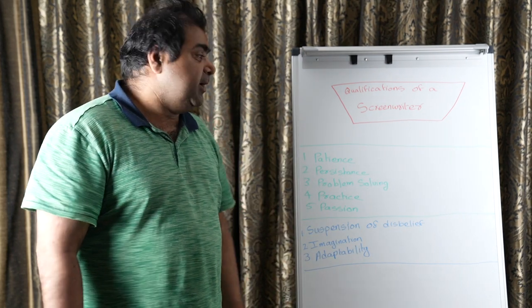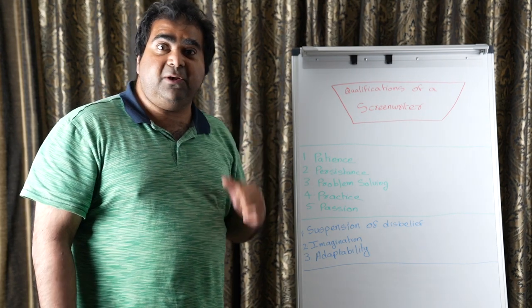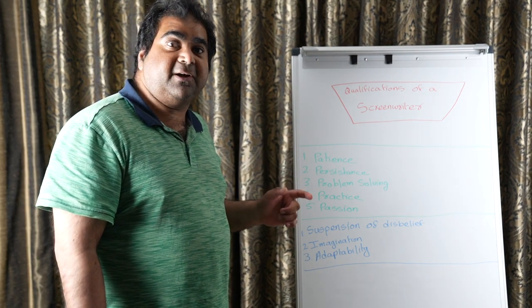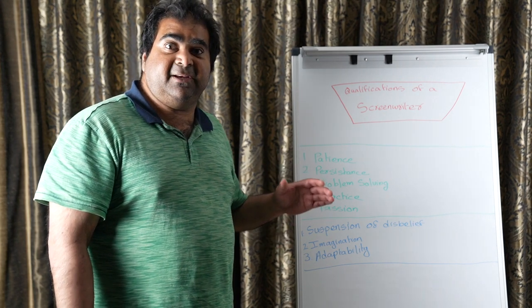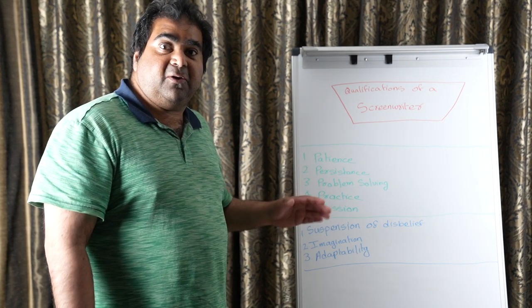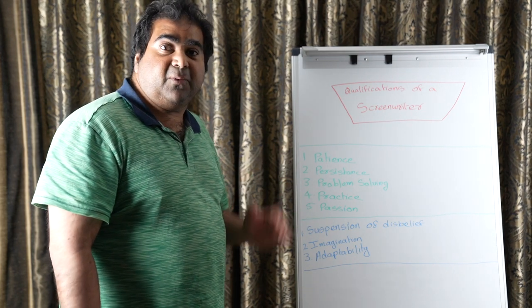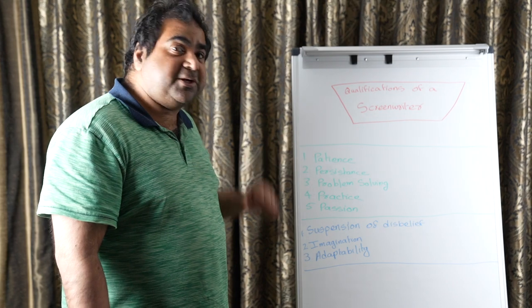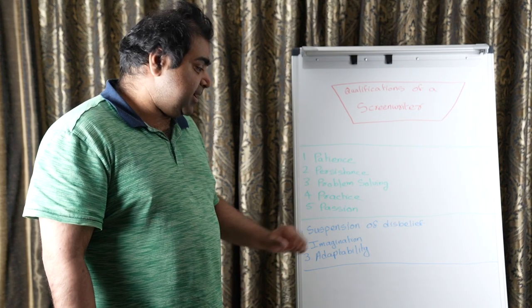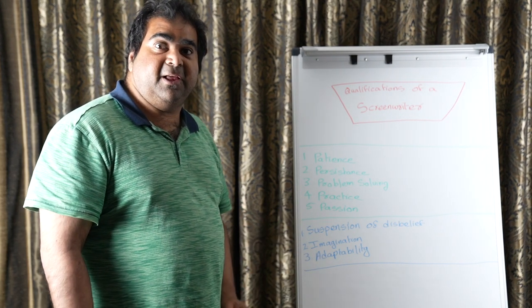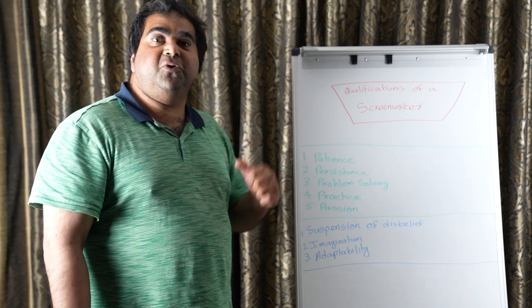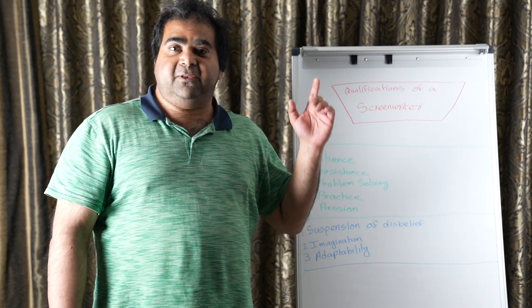Now, there you have it. When you finish with this tutorial, ask yourself: is this you? Is this me? Some of the items on the list need to be innate in you, and the rest will need to be or can be learned. The ones that need to be innate are patience, persistence, passion, suspension of disbelief, imagination, and adaptability — those are the major items that need to be innate. When it comes to problem solving and practice, you can get it; you can learn it.